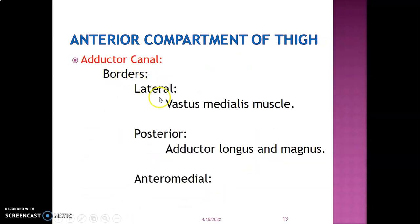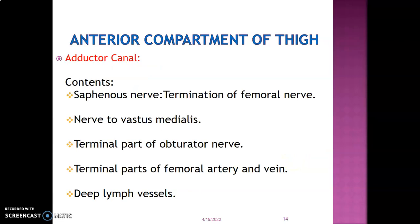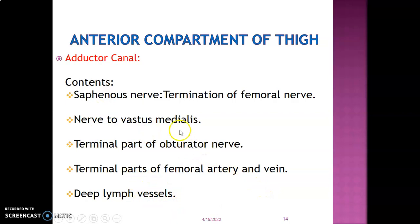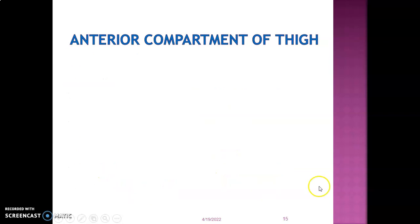The boundaries of the adductor canal: laterally it is formed by vastus medialis, posteriorly by adductor longus and magnus, and anteromedially by the sartorius muscle. The contents of the adductor canal are: the saphenous nerve (the termination of the femoral nerve), the nerve to vastus medialis, the terminal portion of the obturator nerve, the femoral artery and vein — which continue as the popliteal artery and vein through the adductor hiatus — and lymphatic vessels. So there are three nerves and femoral vessels plus lymphatics.